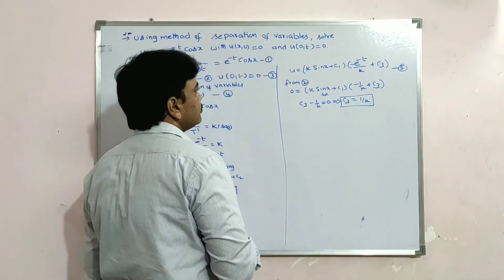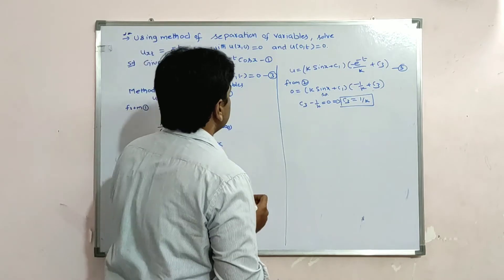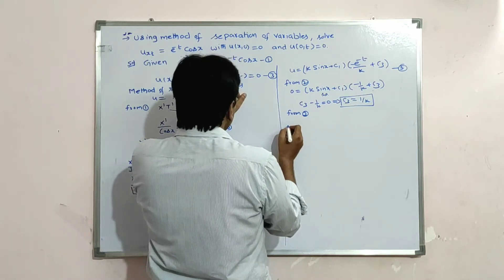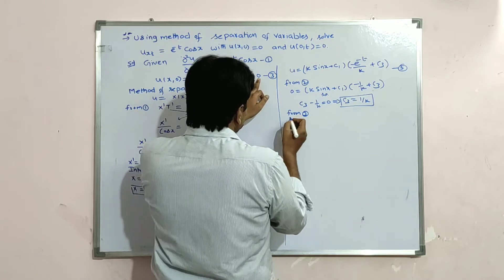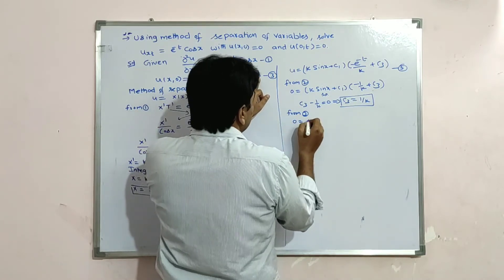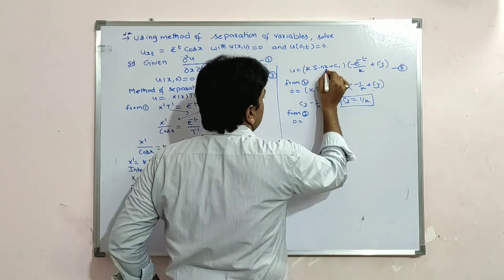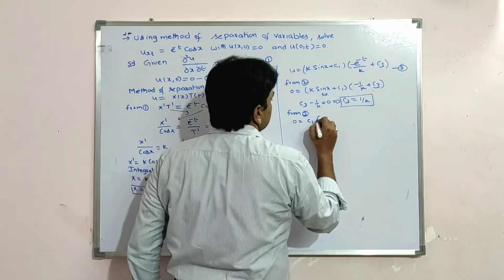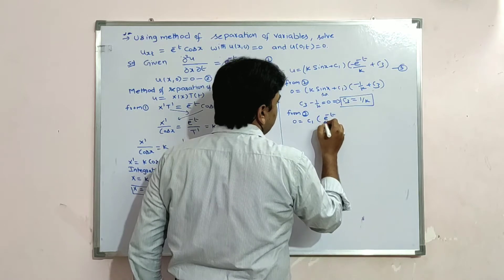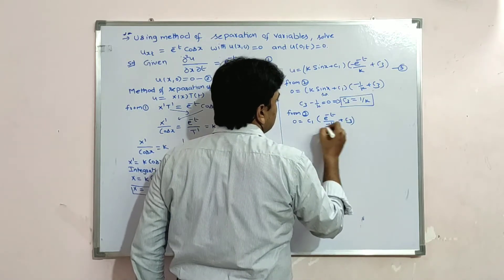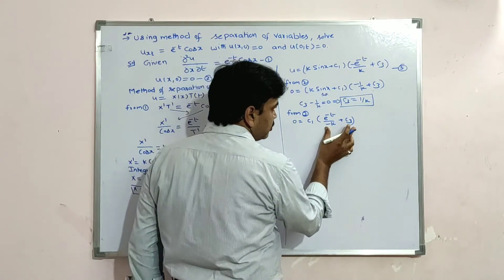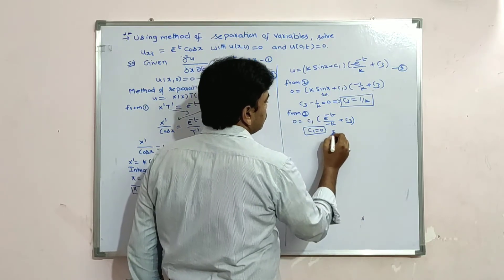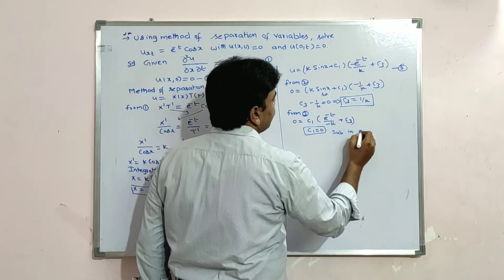From condition 3, u(0,t) = 0: substituting x = 0. Since sin(0) = 0, we get c₁·(−e^(-t)/k + c₃) = 0. This gives c₁ = 0.